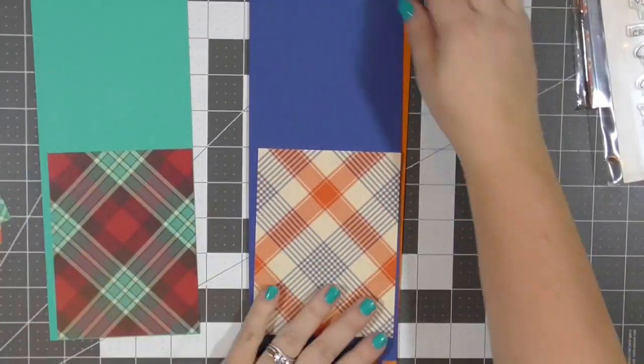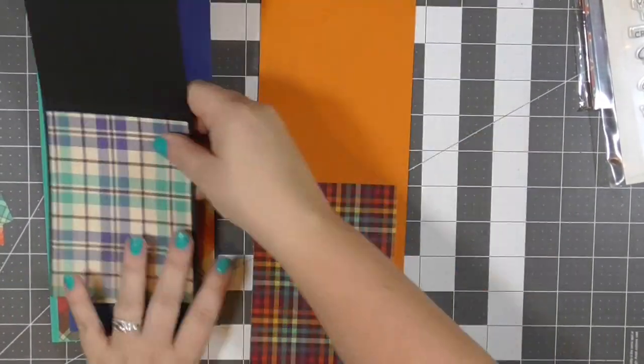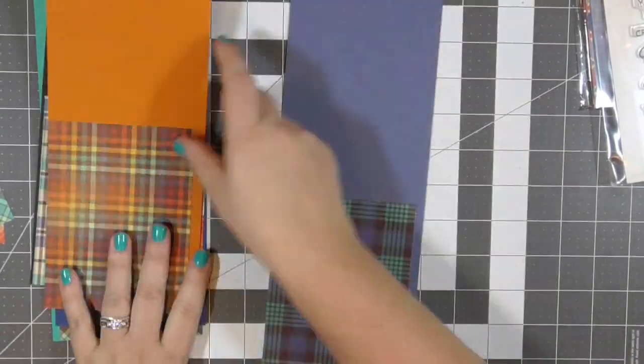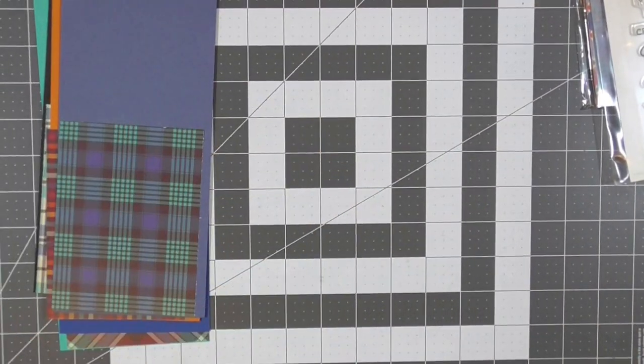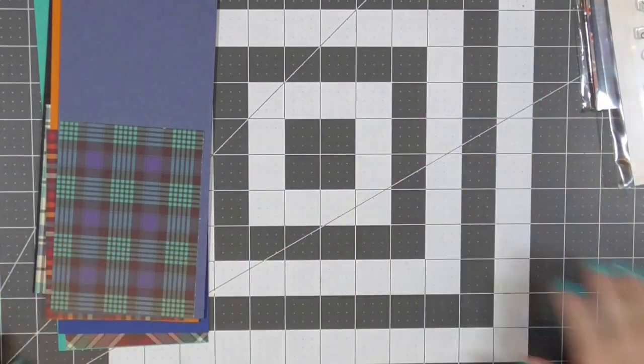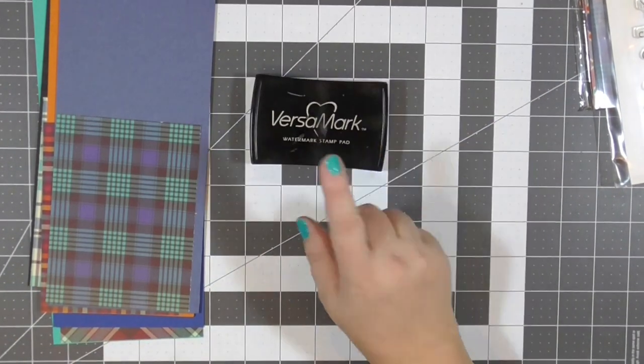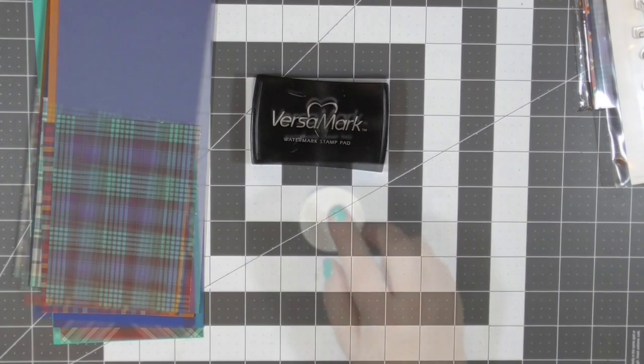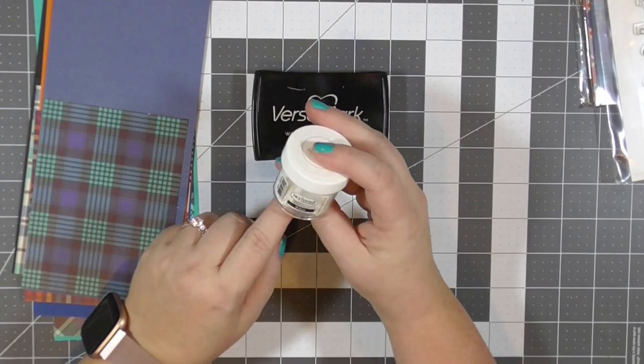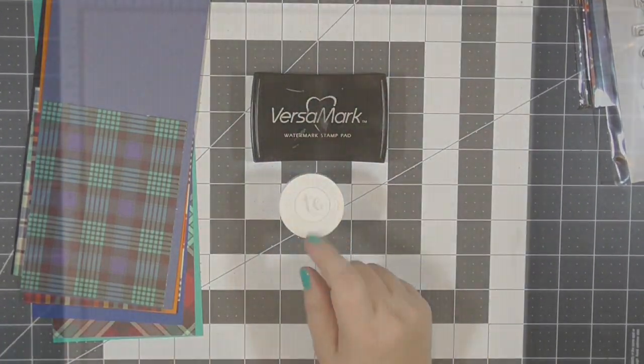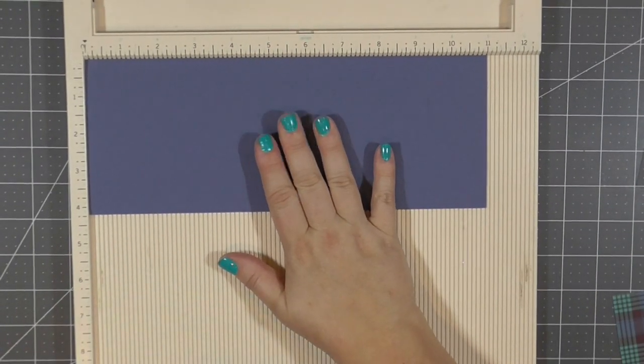I have paired five different patterns with coordinating cardstock. I've trimmed the pattern paper down to four by five and a quarter for now and I've kept the little end strips to make the flag banners with. I will be stamping with VersaMark ink and heat setting the images in white embossing powder instead of coloring today.